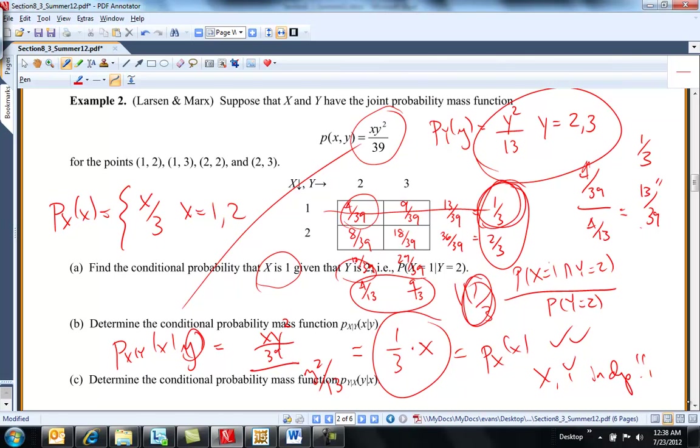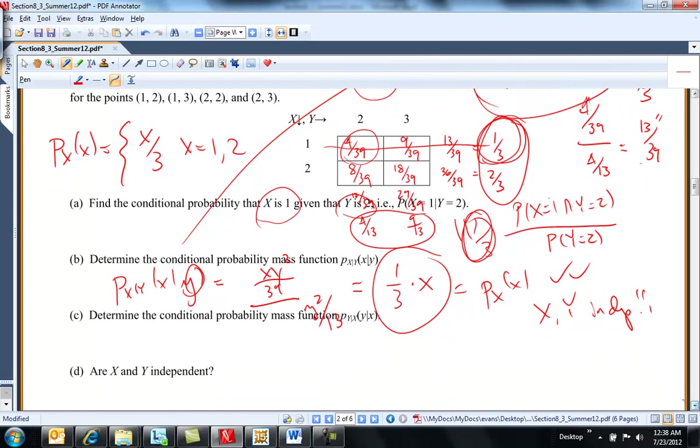Okay. So determine the conditional mass function in the other direction. I'm not going to be as silly this time. Probably Y given X, Y given X. Because I know that they're independent, that's just going to be Y squared over 13. Y equals 2, 3. No matter what Y is, it didn't have an impact on X. And whatever X is, doesn't have an impact on Y. There's the conditional and the conditional.